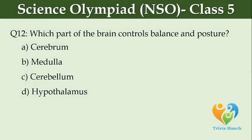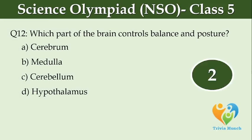Which part of the brain controls balance and posture? Option A: cerebellum, Option B: medulla, Option C: cerebrum, Option D: hypothalamus.